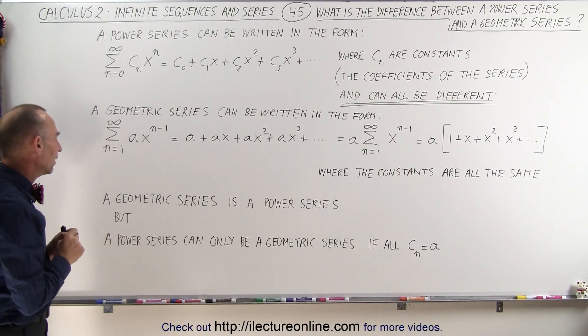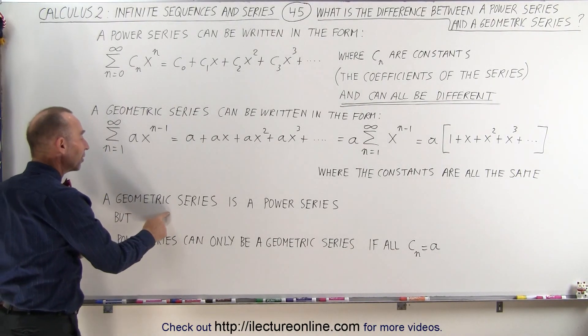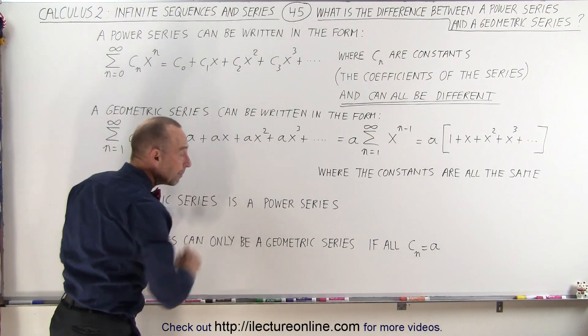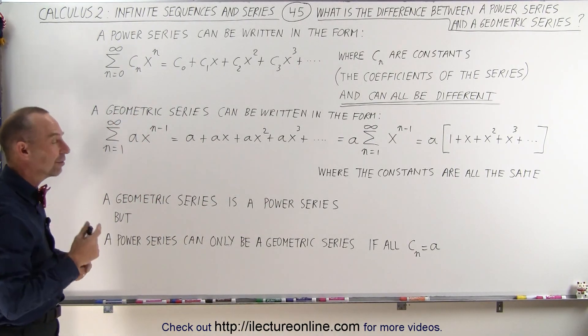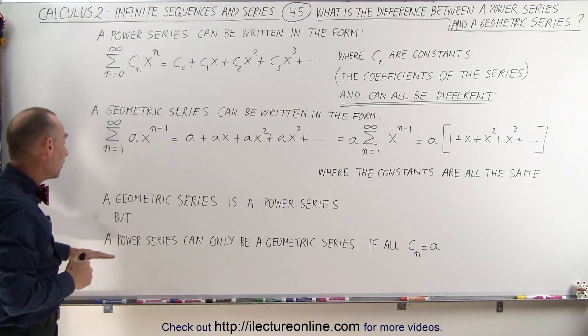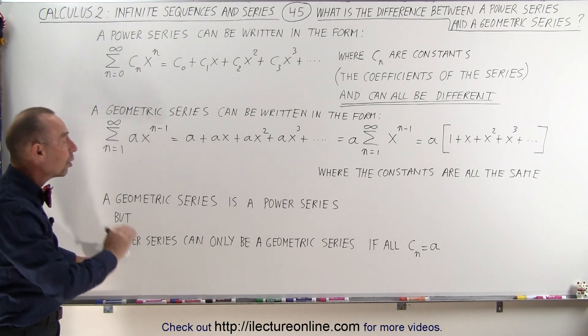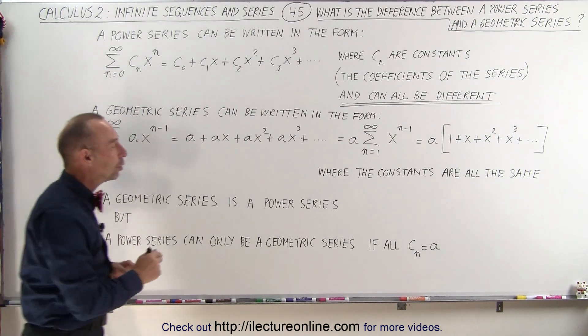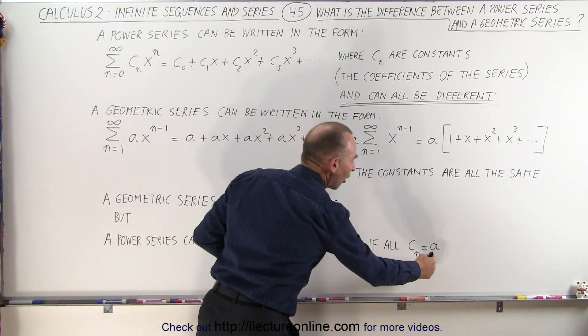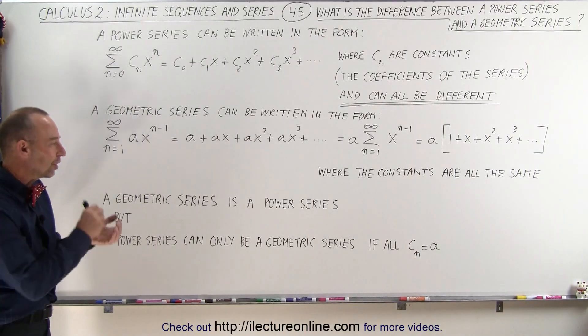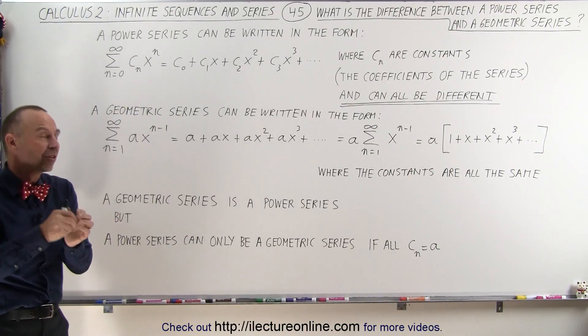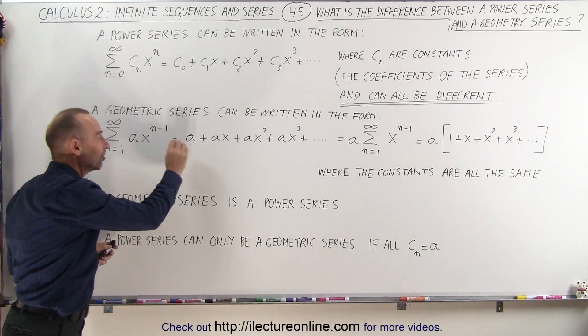Now, one more thing we should understand is that a geometric series is also a power series. It is one of the forms of a power series, but the other way around, a power series can only be called a geometric series if all the constants in the power series are the same, which then also makes a geometric series. So the condition is that in a geometric series, all the constants are the same number.